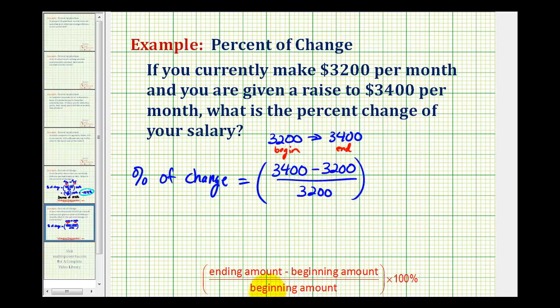It's important to remember the denominator is the beginning amount or starting amount. Now multiply this by 100 percent.